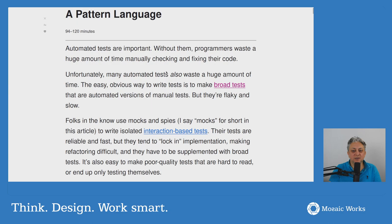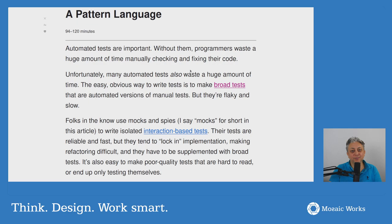The article starts by saying automated tests are important — without them, programmers waste a huge amount of time manually checking and fixing their code. I would hope that seems obvious by now, although I still know too many teams and programmers who don't write automated tests. We need automated tests to ensure we're not breaking things, to reduce the probability of introducing bugs, and to get the psychological safety that lets you add code on solid ground and move faster.